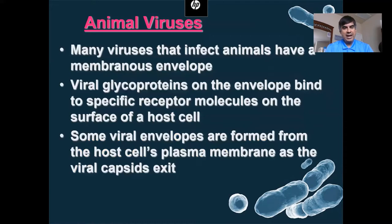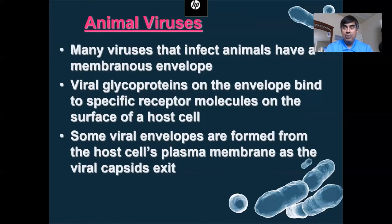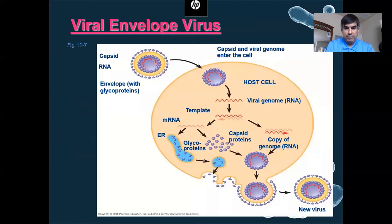Let's focus now on viruses that attack more eukaryotic cells, specifically animal cells. Many viruses that infect animal cells tend to have a capsid, a protein coat, but outside the protein coat they have a membranous envelope — a lipid bilayer outside. This makes it specific to attacking animal cells. They usually also tend to have viral glycoproteins on the envelope that bind to specific receptors, tricking animal cells into thinking it might be something it needs.